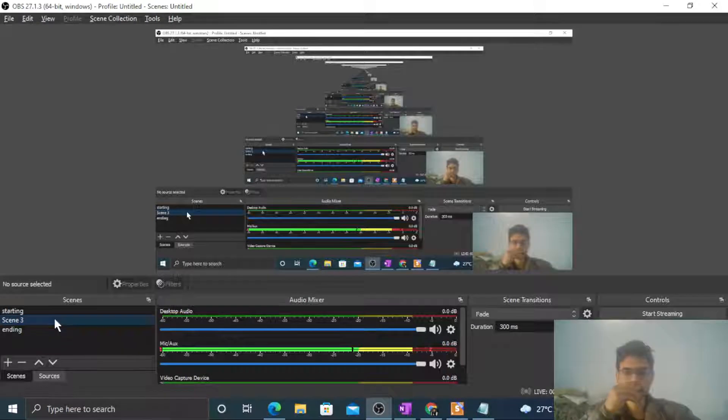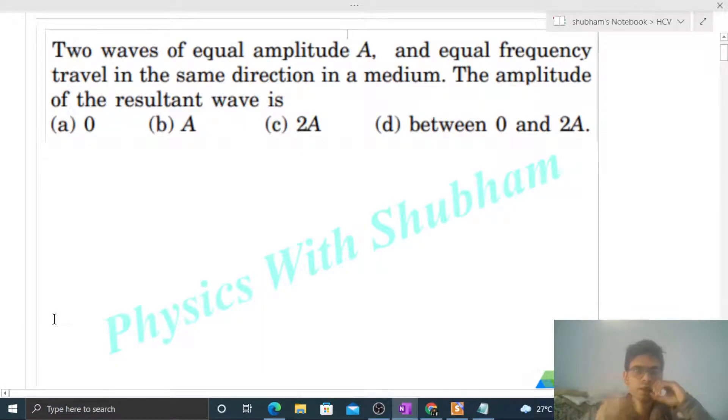Okay, hi everyone. Today let's discuss one interesting problem. It says two waves of equal magnitude A and equal frequency travel in the same direction in a medium. The amplitude of the resultant wave is—so when we have two waves in a medium, what will happen?